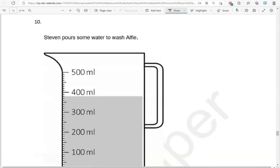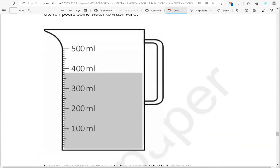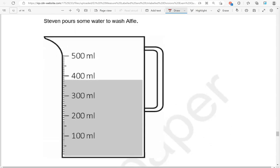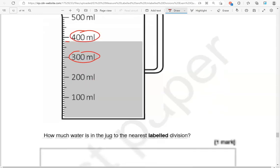Stephen pours some water to wash Alfie. How much water is in the jug to the nearest labeled division? That is in between 300 and 400, and it's closer to 400 milliliters.